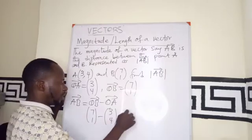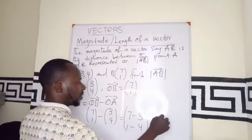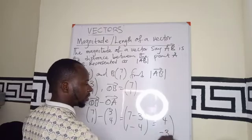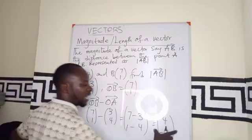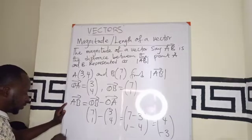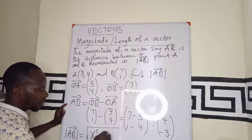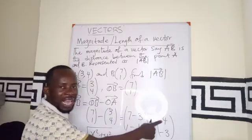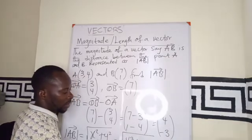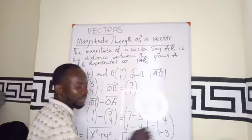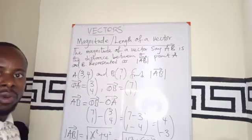So, if I have this, this is going to be 7 minus 3, 1 minus 4, and that will give us 4, minus 3. So, it means I have my vector AB giving us 4, minus 3. Therefore, the magnitude of AB is going to be just the square root of X squared plus Y squared. Because I now have the X value and the Y value. So, straightforward, the square root of 4 squared plus the square root of minus 3 squared.